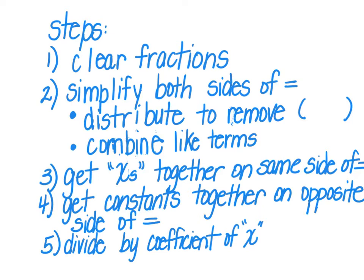Once you get your left side and your right side cleaned up, the third step is to get your x's or your variables together on the same side of the equal sign. This is the step that will usually involve moving a term from one side to the other. The fourth step is to get the constants together on the opposite side of the equal sign, away from your variable term.